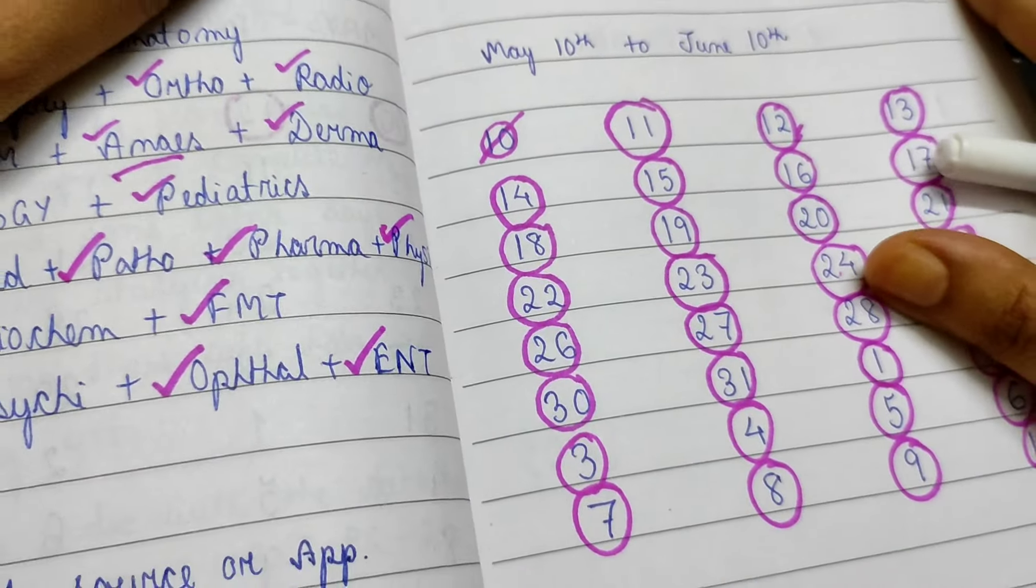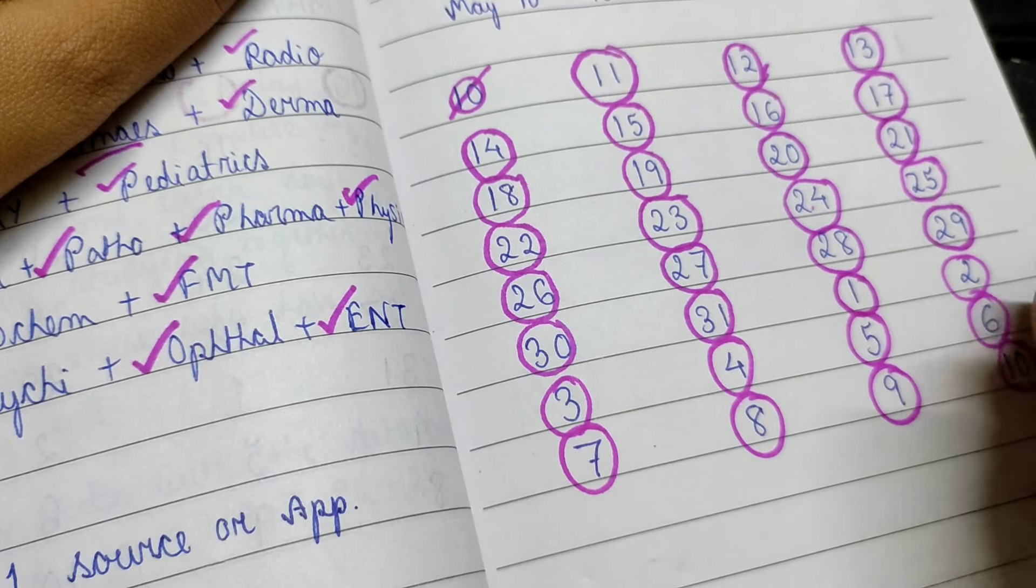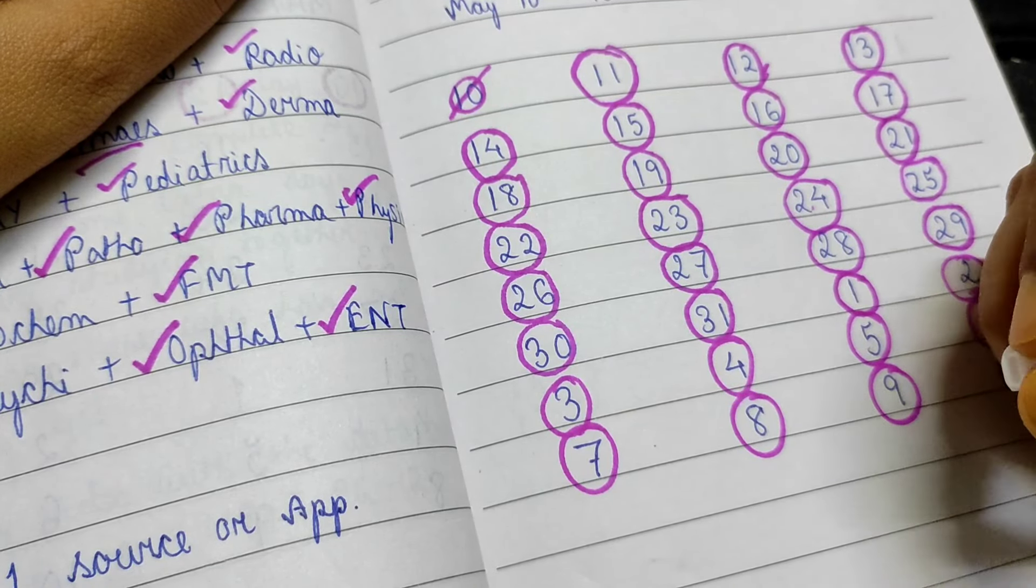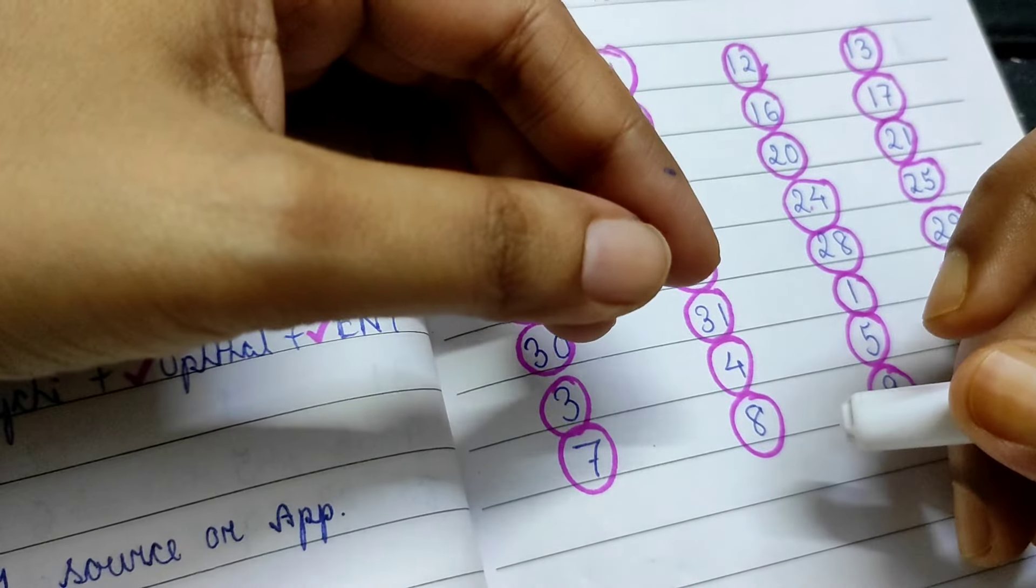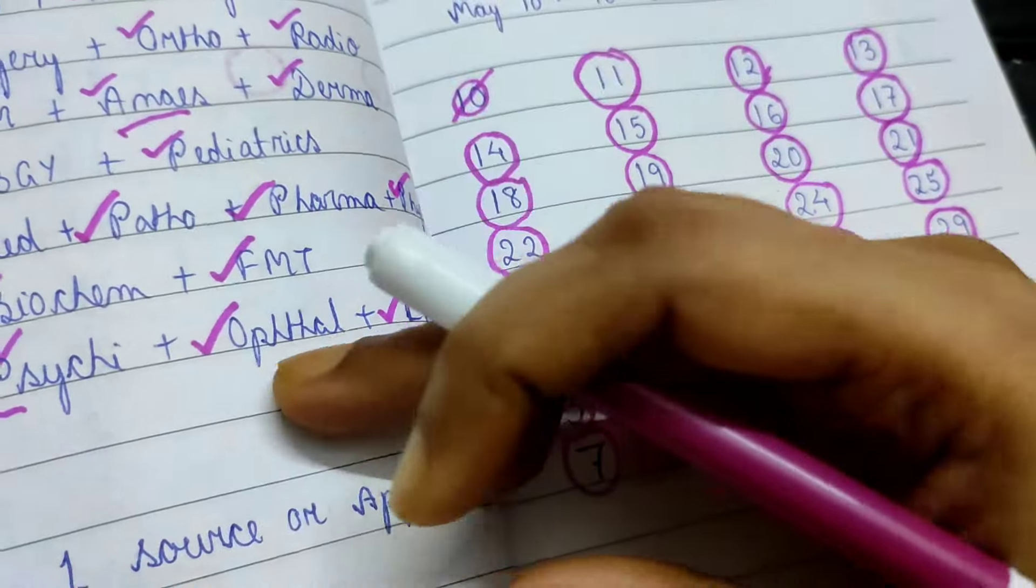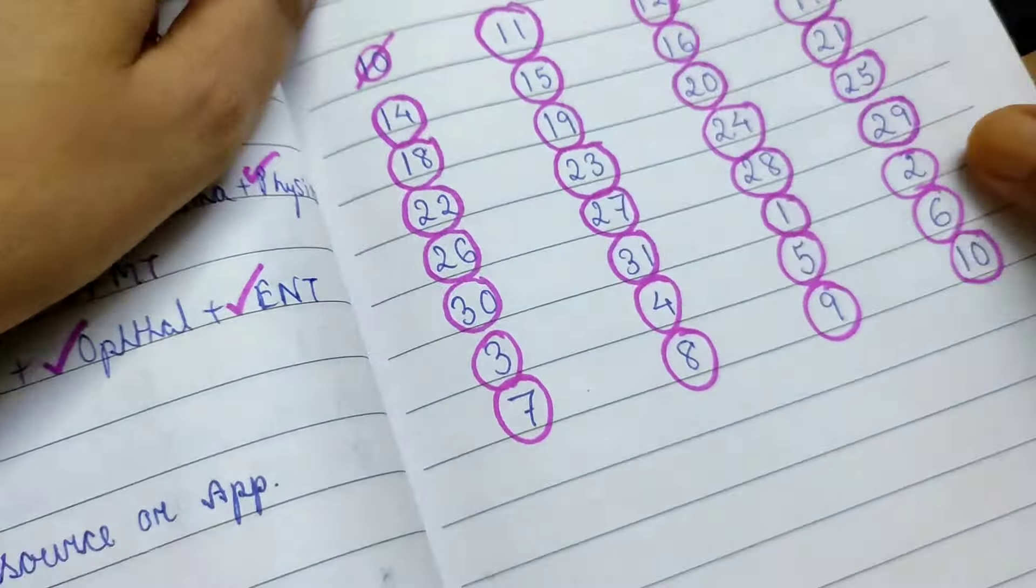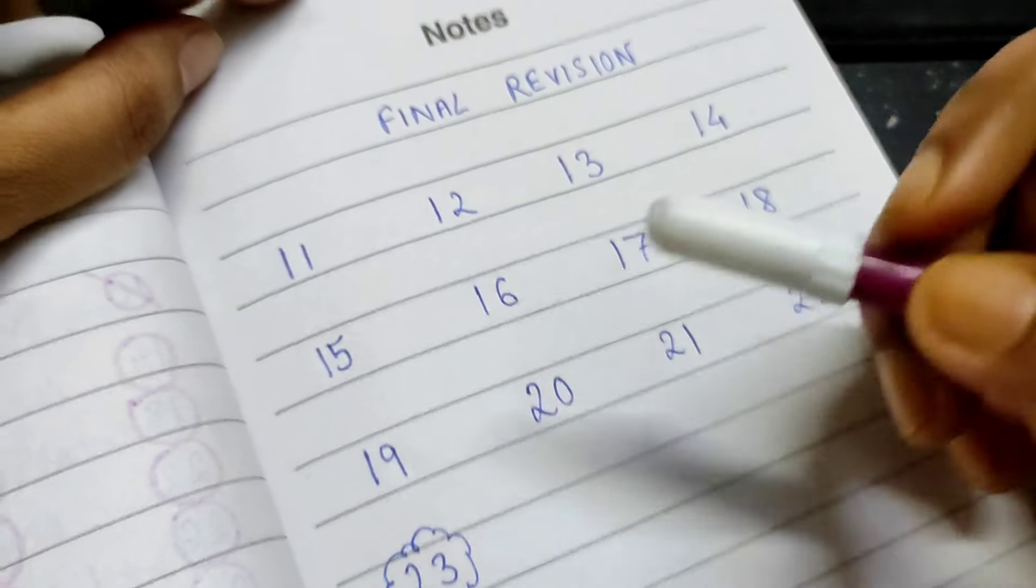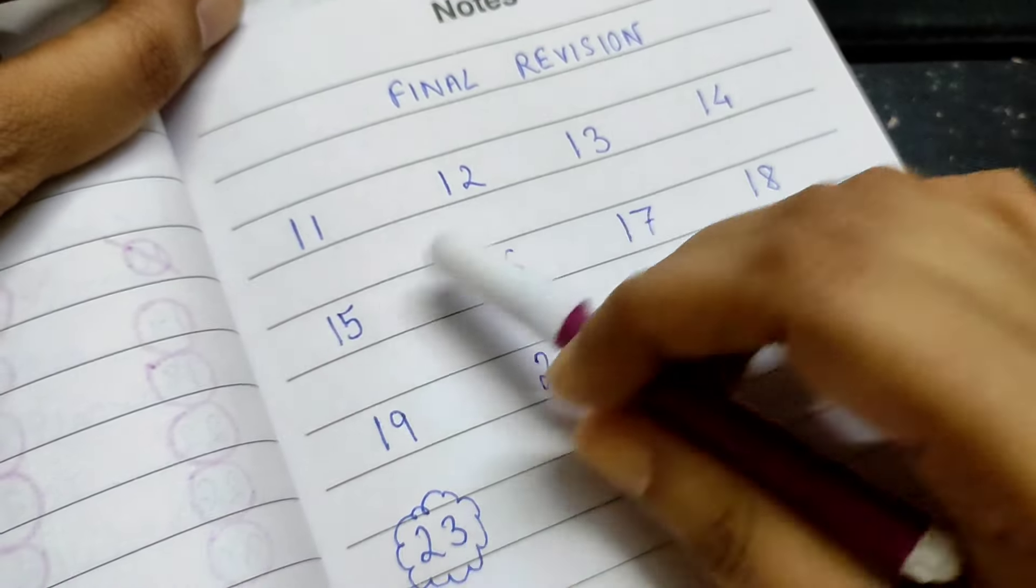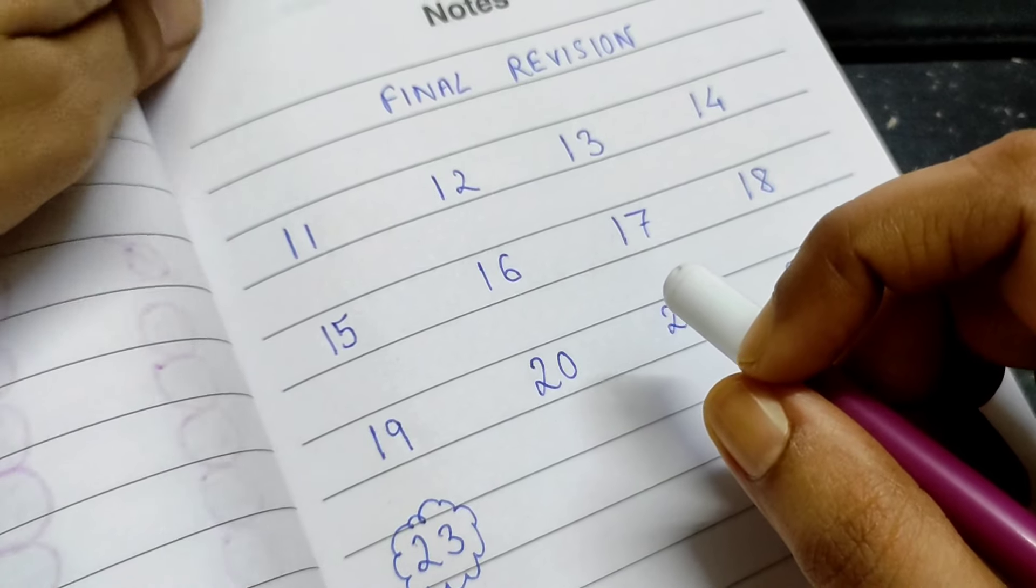But the question is what to do from tomorrow. Today I'll be appearing for the mock test as I have said, so today I won't be able to start revising, but appearing for a mock test is also kind of revising the high-yield topics, right? So we should take it as a revision only. But from tomorrow, that is 11 June, from 11 June to the D-day, that is 23rd June, the day of our examination, we need to be really cautious of what steps we take to revise, and so we need to build a strong revision plan.